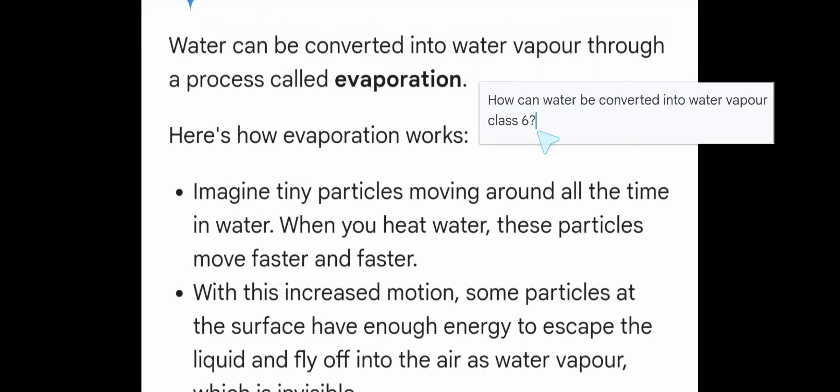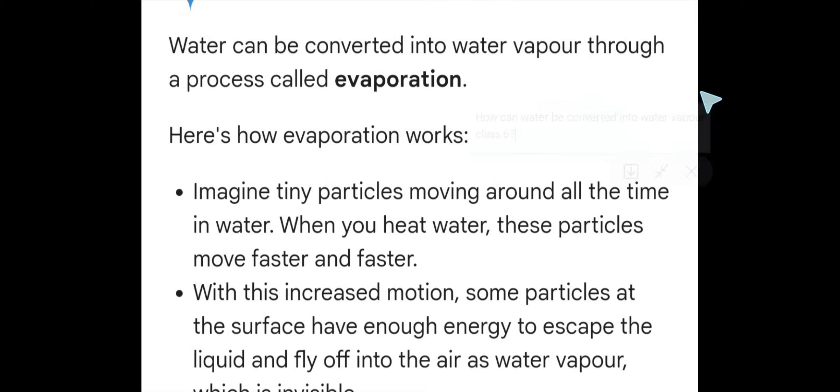You have asked this question: how can water be converted into water vapor for class 6? So here is the answer. Water can be converted into water vapor through a process which is called evaporation.